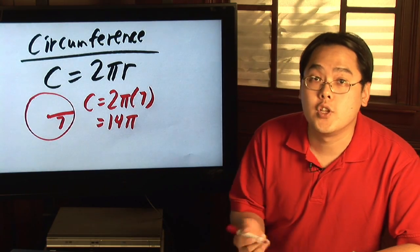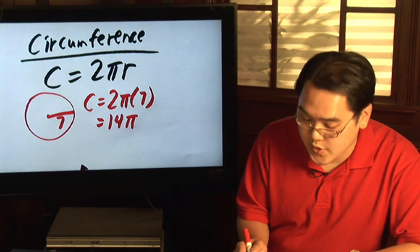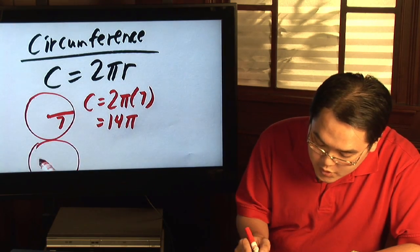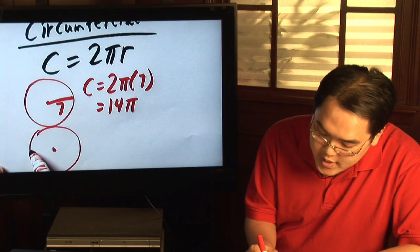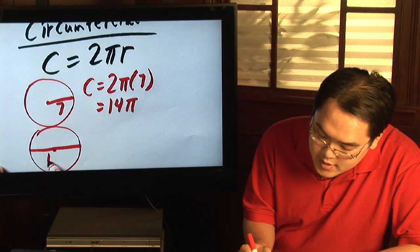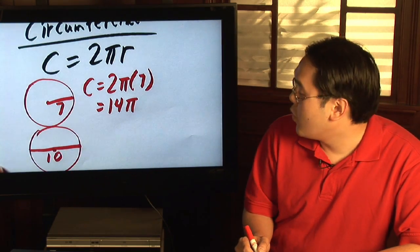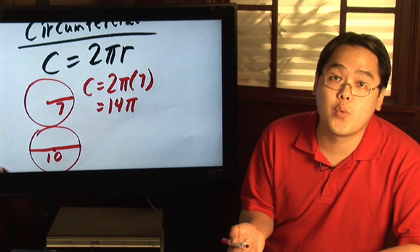Now, the only other thing that they might throw at you when finding the circumference of a circle is if they give you another circle and let's just say the distance from one end of the circle to the other is 10. Well, in that case, you still need to find the radius,